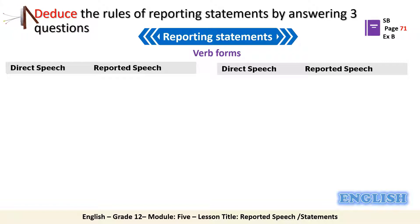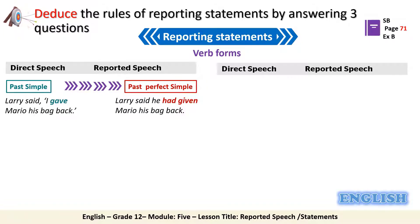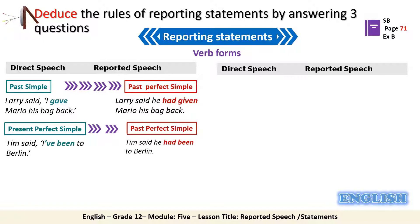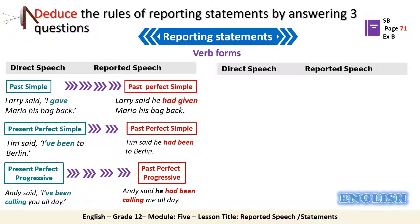We continue with the changes that occur to the verb forms. The past simple tense changes to the past perfect simple — for example, 'gave' becomes 'had given.' Then the present perfect simple changes to the past perfect simple — like in the example 'have been' changes to 'had been.' Then if we have the present perfect progressive in direct speech, we should change it to the past perfect progressive — for example, 'have been calling' changes to 'had been calling.'